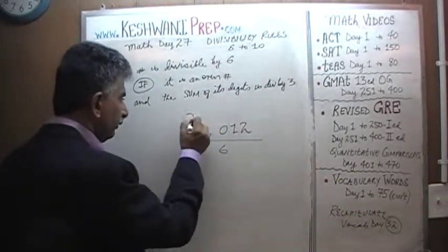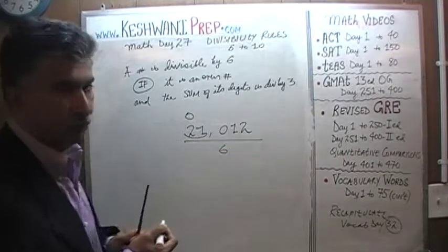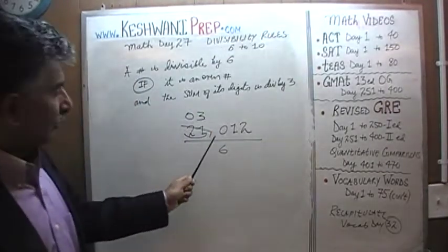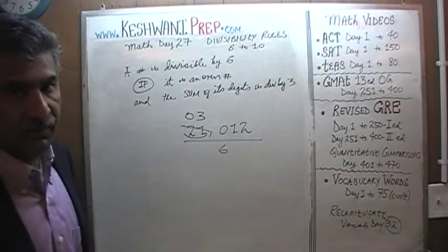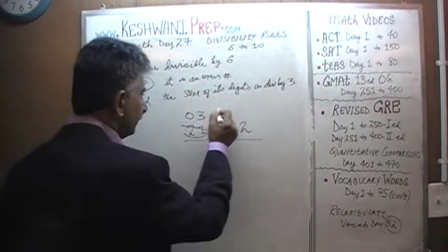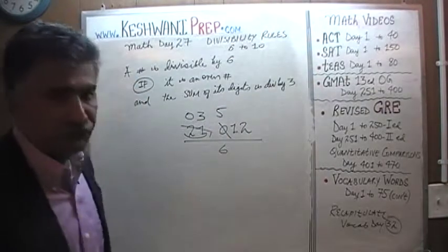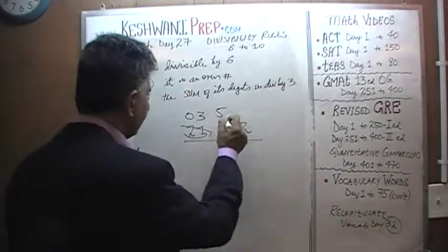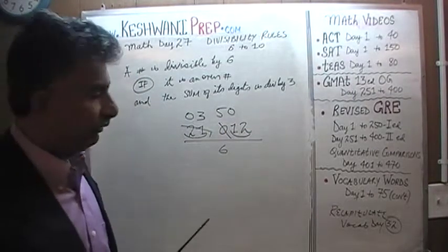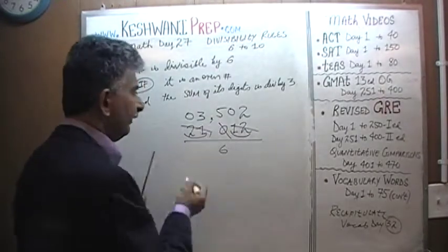Let's work it out. How many 6s does 2 have? 2 has no 6s, so that 2 goes and joins the 1 to become 21. 21 has three 6s. The remaining 3 goes and joins the next 0 to become 30. 30 has five 6s. Then how many 6s does 1 have? 1 has no 6, so the 1 joins the 2 to become 12, and 12 has two 6s. So the answer is 3,502.